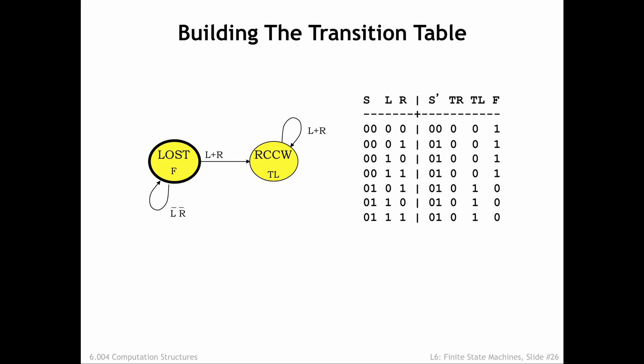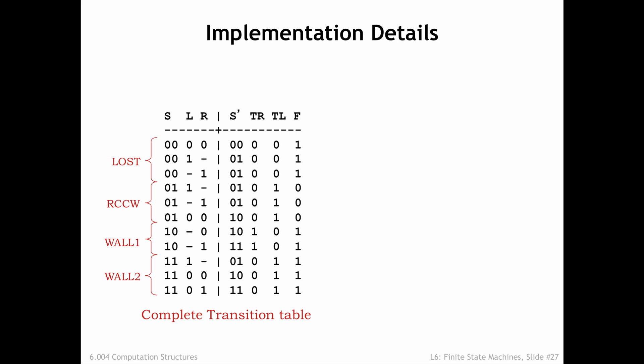Now we can tackle the transitions from the rotate counterclockwise state. If either antenna is touching, the next state is again rotate counterclockwise, so we've identified the matching values for the inputs and added the appropriate 3 rows to the transition table. We can continue in a similar manner to encode the transitions one by one. Here's the final table, where we've used don't cares to reduce the number of rows for presentation. Next we want to come up with Boolean equations for each of the outputs of the combinational logic — the two next state bits and the three motion control outputs.